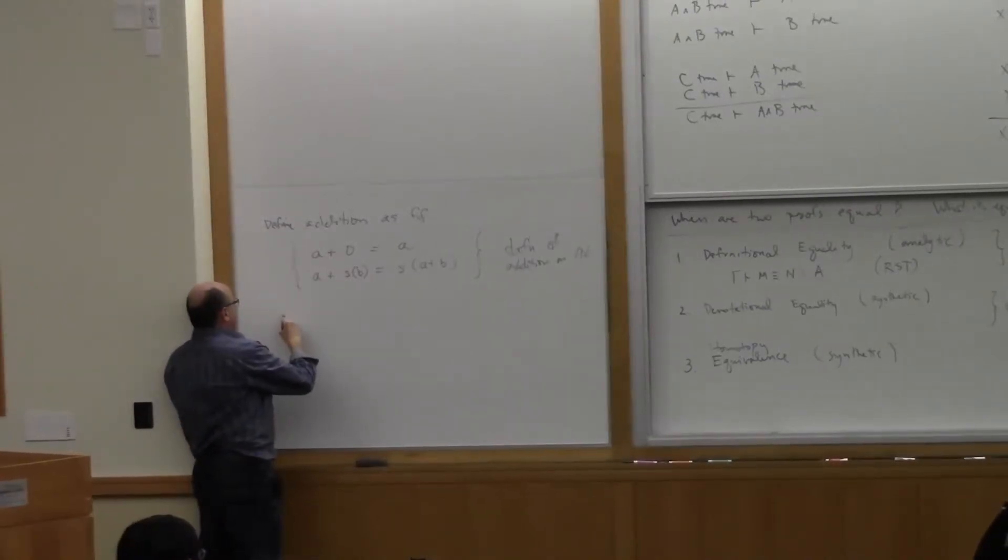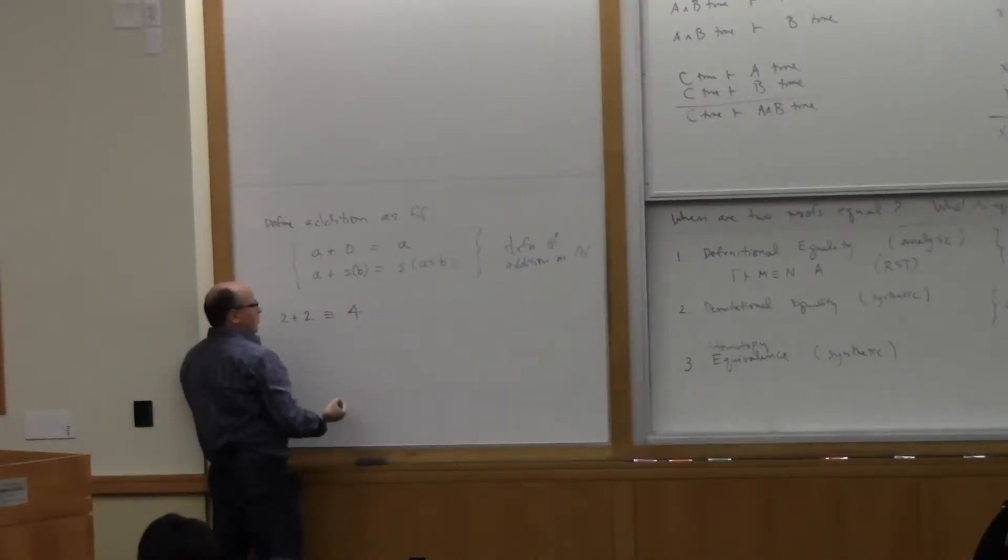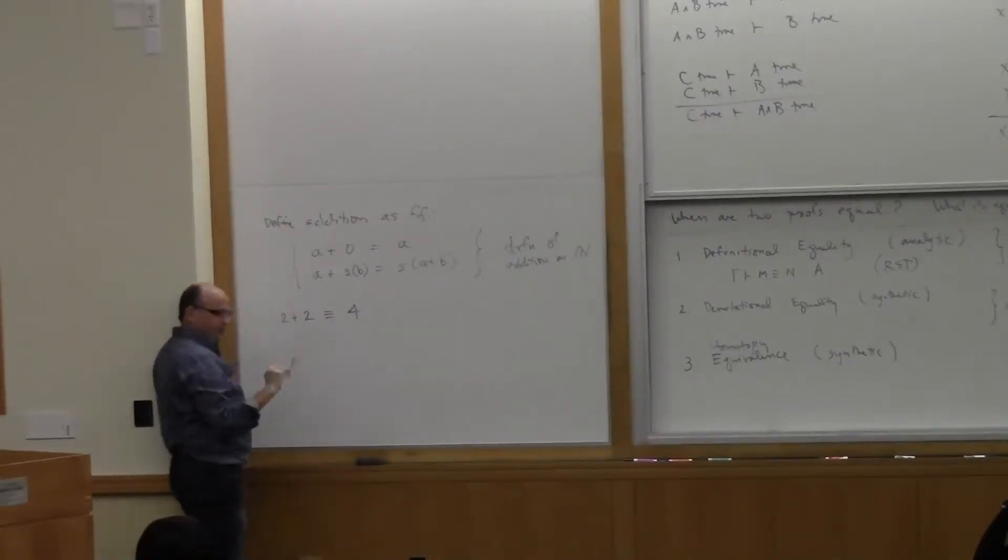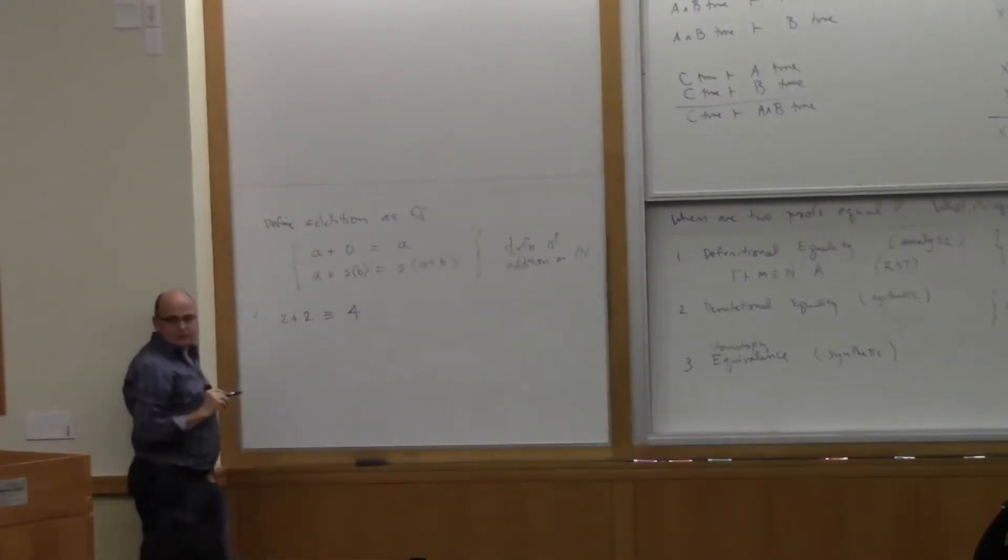So, first of all, if I wrote something like 2 plus 2, I claim that this should be considered to be definitionally equal to 4. Let me not write colon n every time. Supposed to be colon n for the natural numbers, but let me just write it like this. This is a true, correct definitional equivalence.